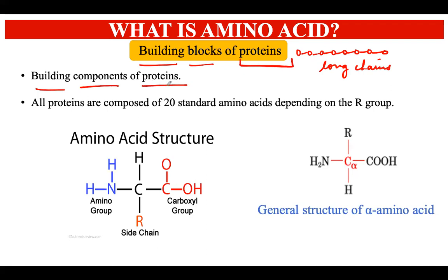All the different proteins that exist in biological bodies are composed of 20 standard amino acids. In total there are 20 standard amino acids, and all these 20 amino acids join together in different permutations and combinations to form millions of different proteins.